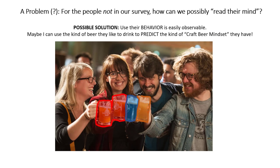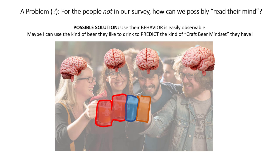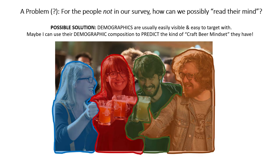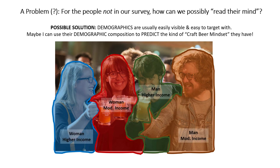One possible solution is that we use the behavior of the craft beer drinker to predict what's inside their mind. These individuals were all drinking different styles of beer — by knowing what they're drinking, which a marketer can easily observe, maybe we can reliably predict what's inside their mind and which segment we're trying to reach. Another solution is using demographic variables, since demographic information is usually easily visible or easy to target within the market.